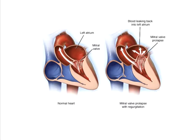In the diagram shown in the left half, you can see that the mitral valve is not closing properly as a result of mitral valve prolapse, and therefore the blood goes back into the left atrium when the ventricle contracts.